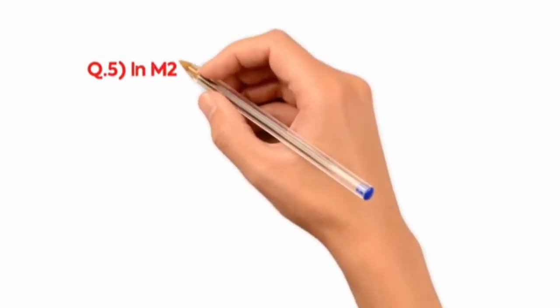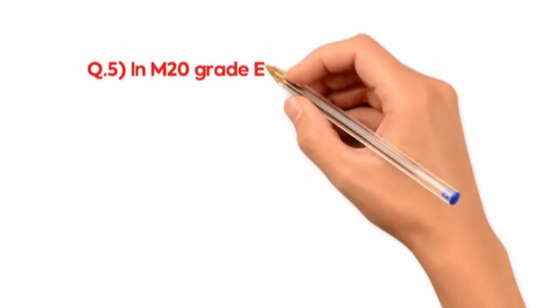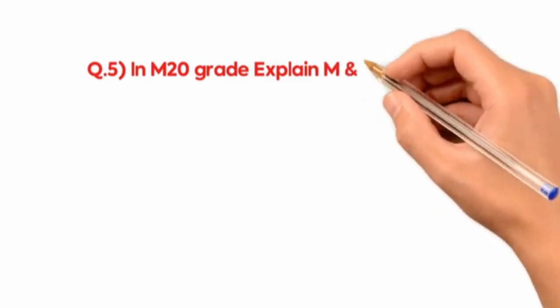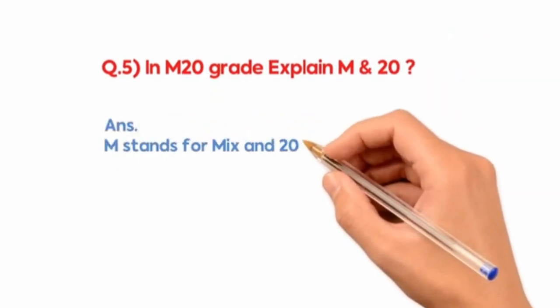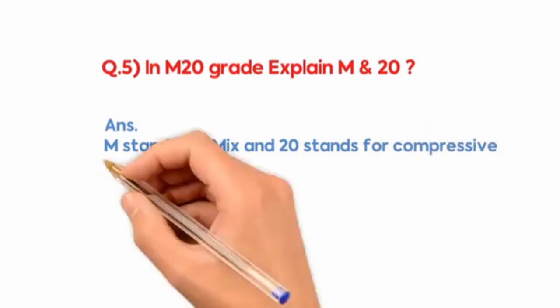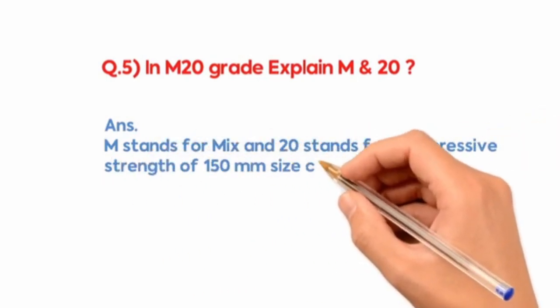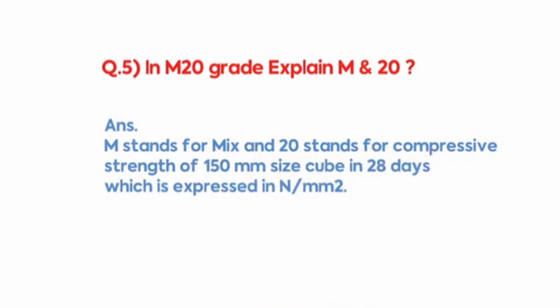In M20 grade explain M and 20? M stands for mix and 20 stands for compressive strength of 150 millimeter size cube in 28 days.